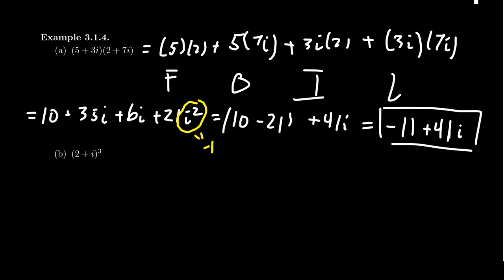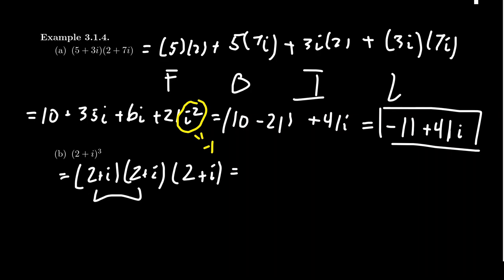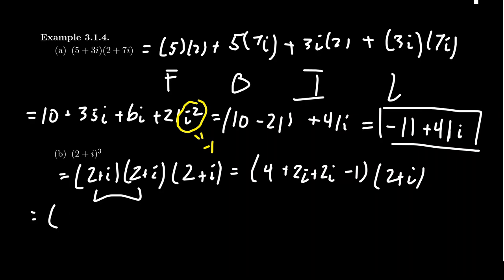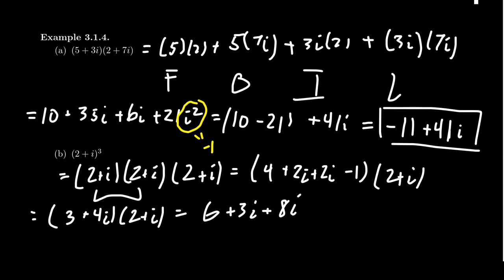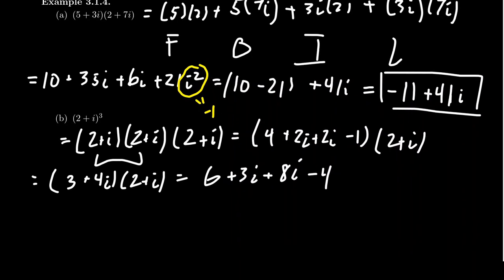When you FOIL out complex numbers, you just have to remember to replace i squared with negative one. What if we wanted to compute (2 + i) cubed? That means (2 + i)(2 + i)(2 + i). FOILing the first two: 2 times 2 is 4, plus 2i, plus 2i, plus i squared which becomes negative 1. Combining like terms: 4 minus 1 is 3, and 2i plus 2i is 4i, giving us (3 + 4i). Now multiply that by (2 + i): 3 times 2 is 6, 3 times i is 3i, 4i times 2 is 8i, and 4i times i is negative 4 (replacing i squared). Combining: 6 minus 4 is 2, and 3i plus 8i is 11i. So (2 + i) cubed equals 2 plus 11i.